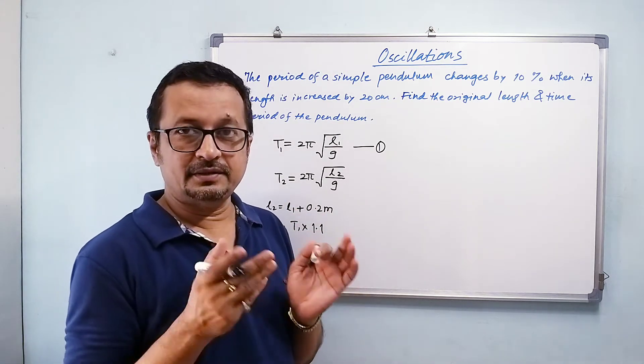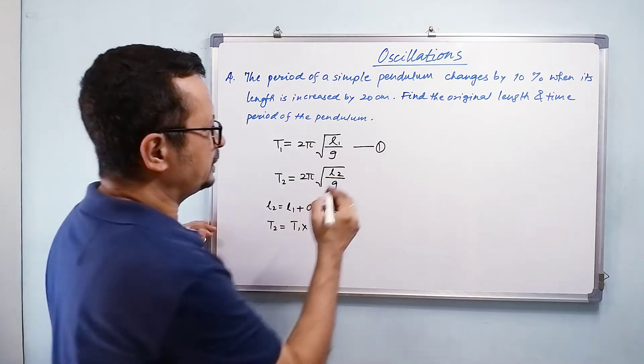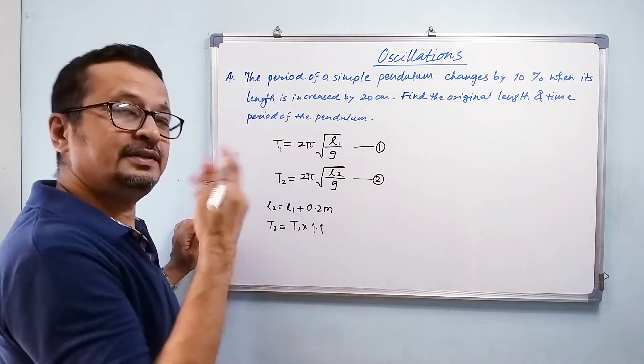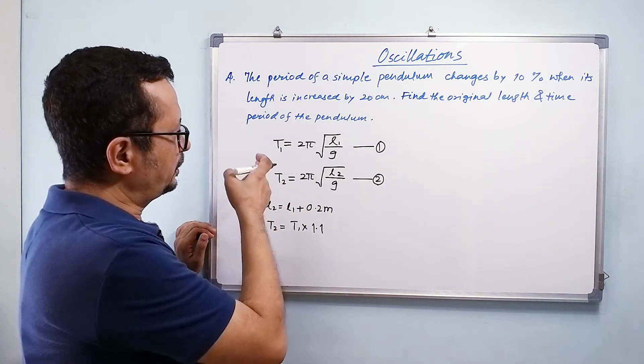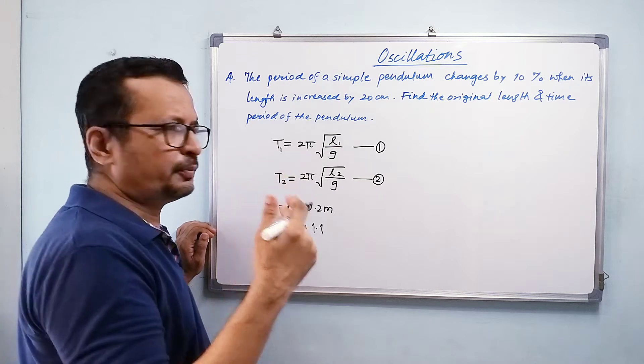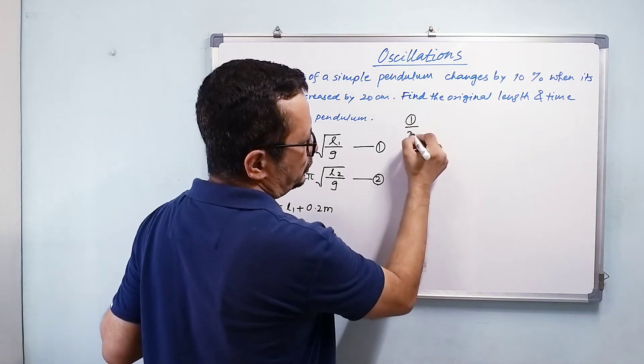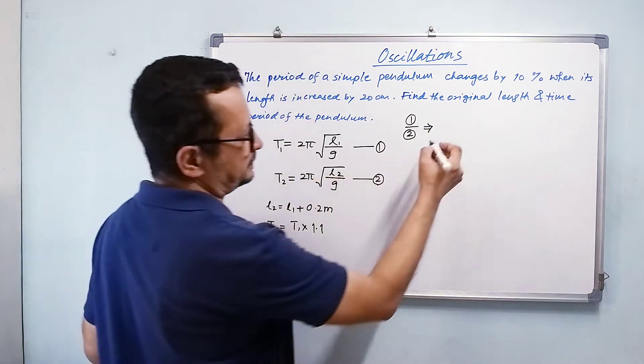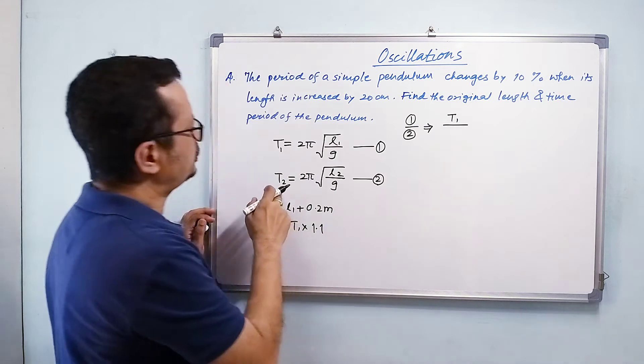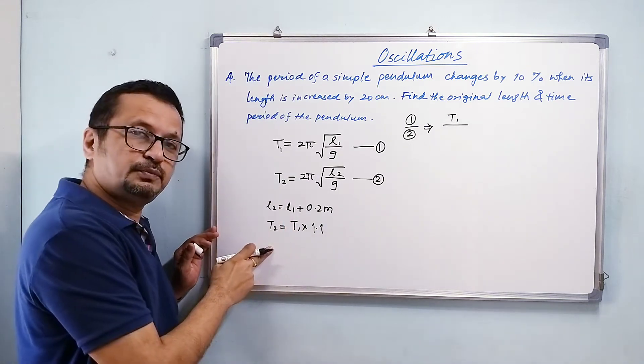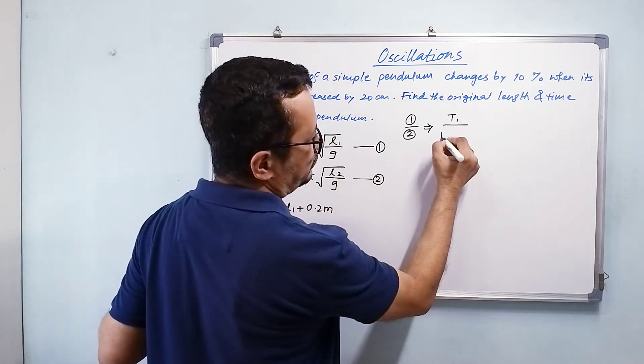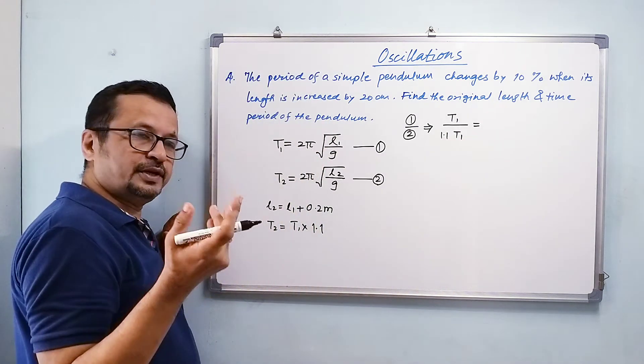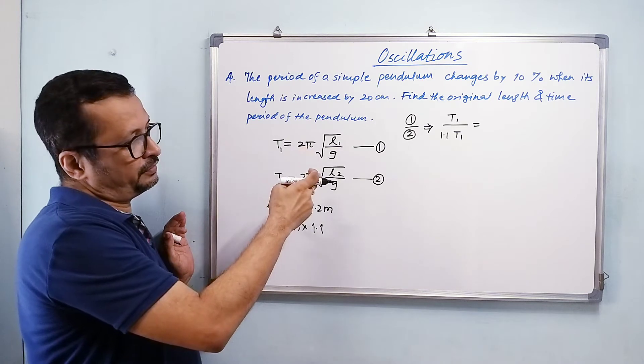Now if we call this expression number 2, and then we do 1 upon 2, that gives me T₁/T₂. T₁ upon T₂, which is 1.1T₁, so T₁/1.1T₁, that is equal to 2π gets cancelled and we have √(l₁/l₂).